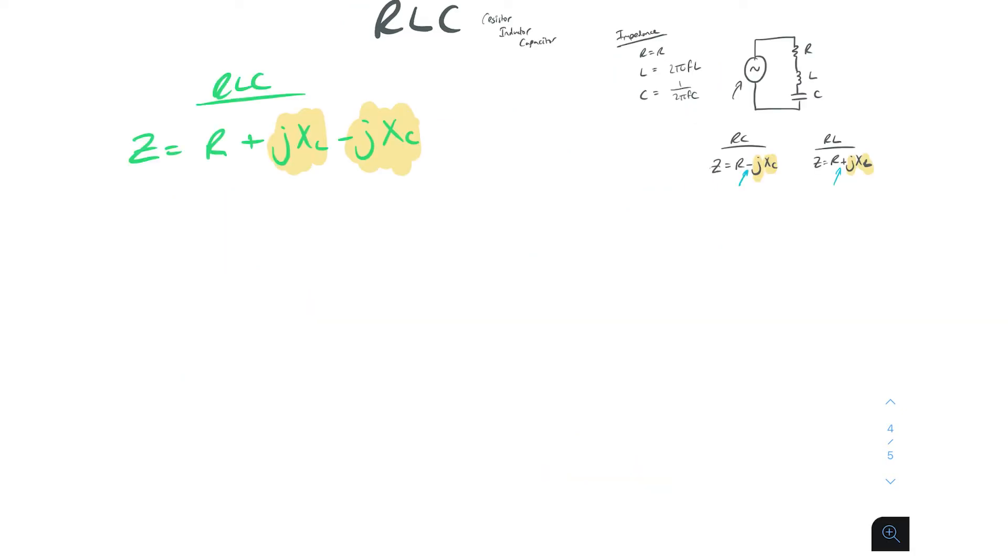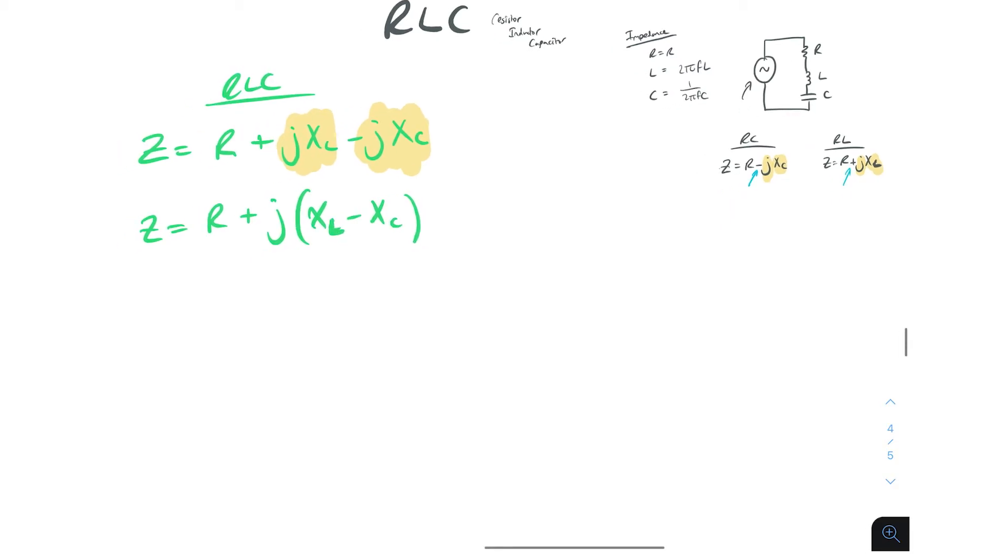We can obviously then just factor out the j. So that means that we have impedance is equal to R plus j and then in brackets XL minus XC. And so now here we have our formula for calculating impedance in an RLC circuit.